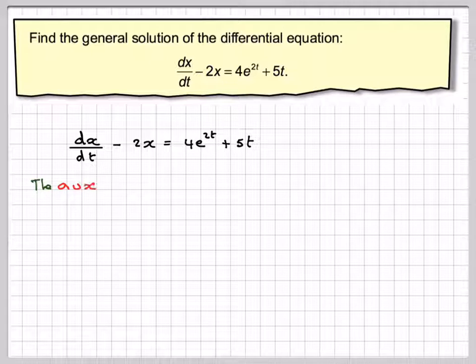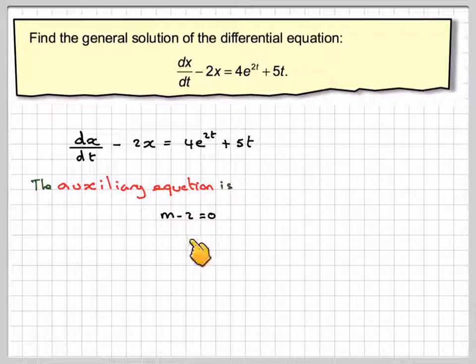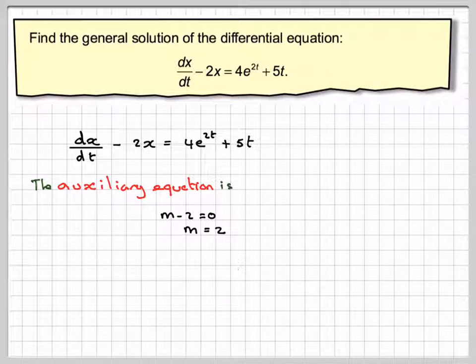First of all, we find the auxiliary equation. The auxiliary equation for this will be m minus 2 is equal to 0, which gives m is equal to 2.